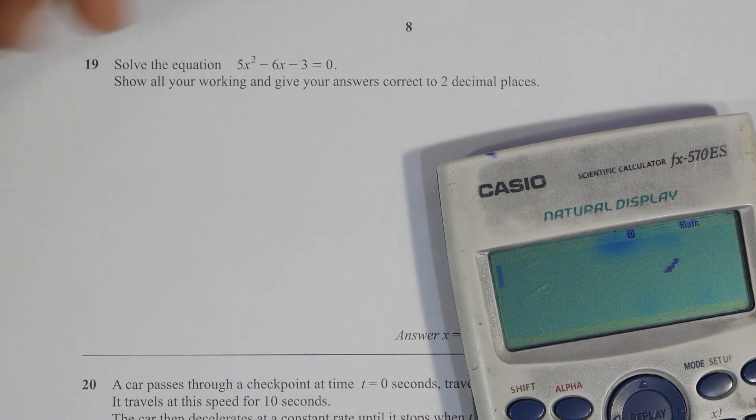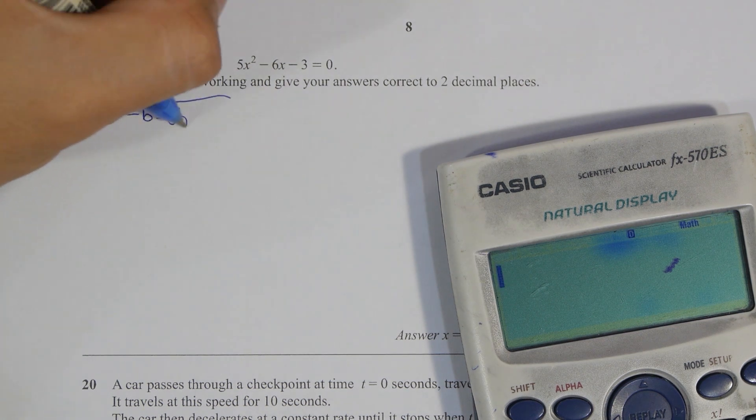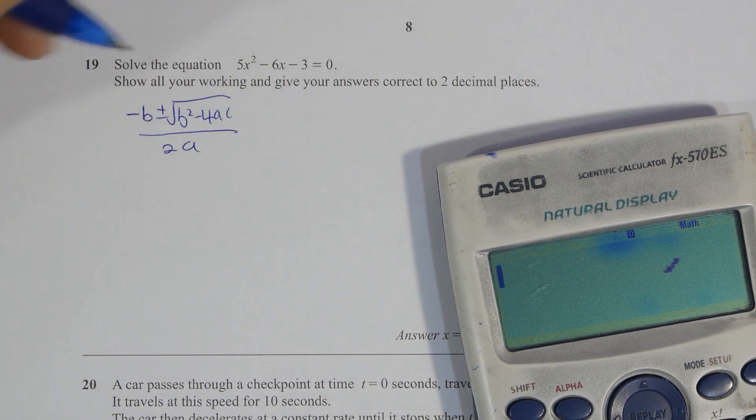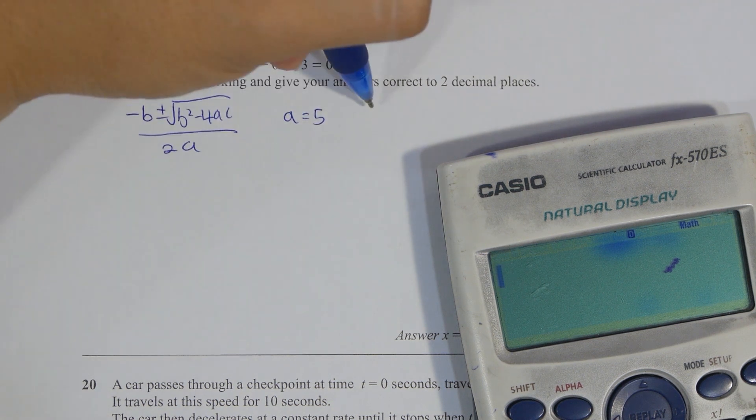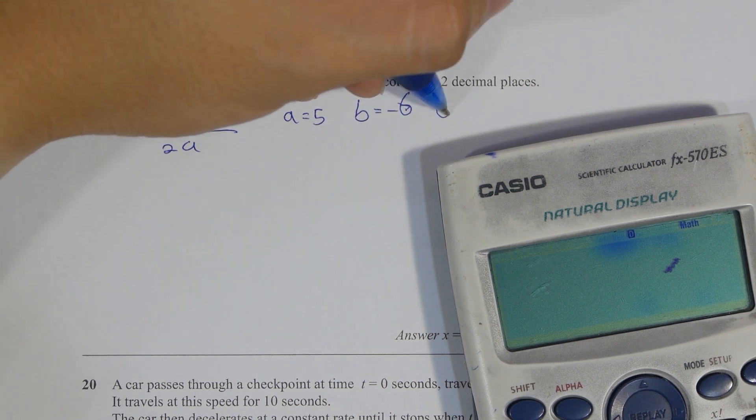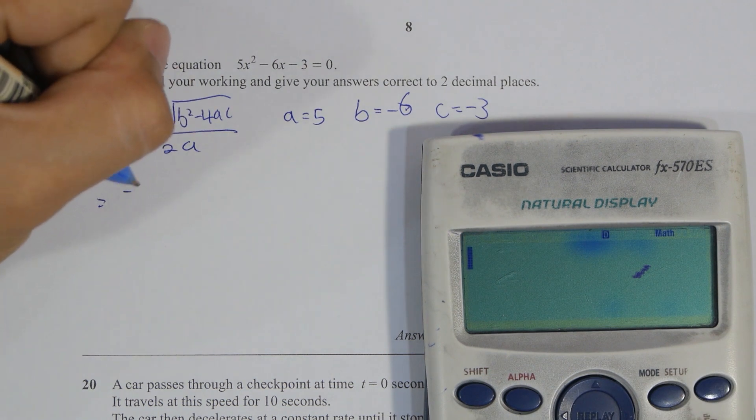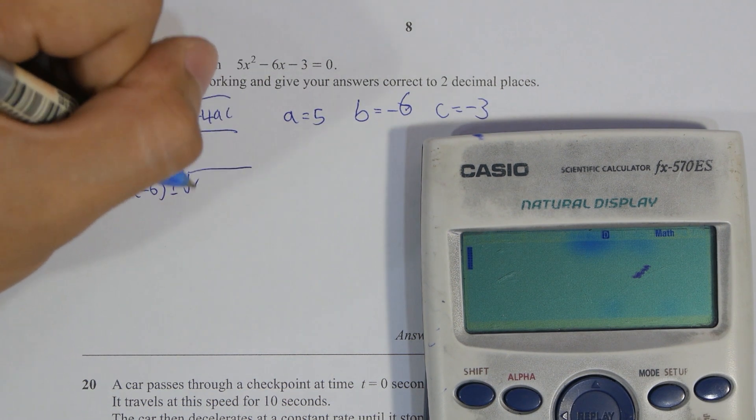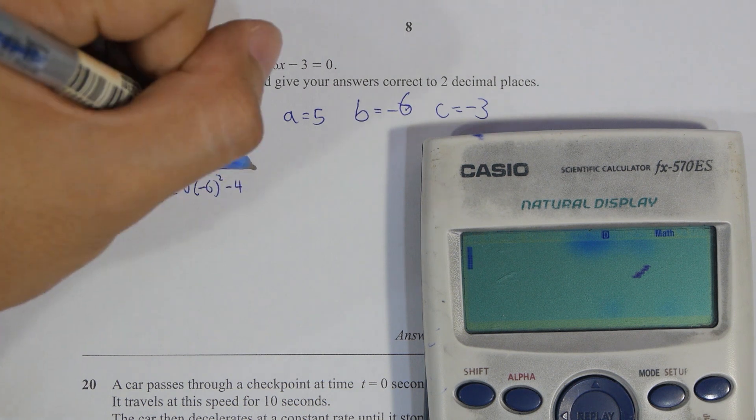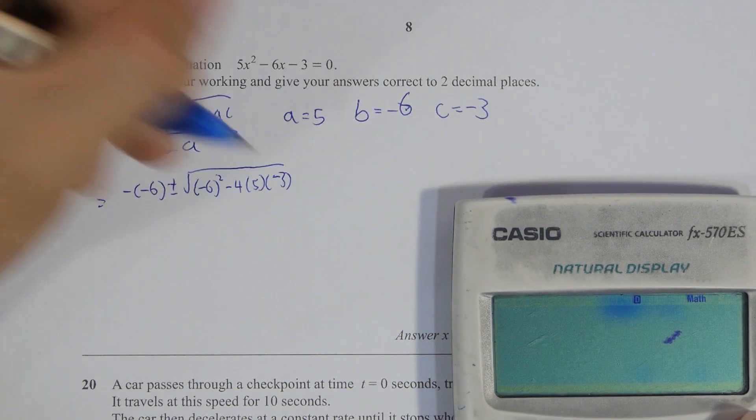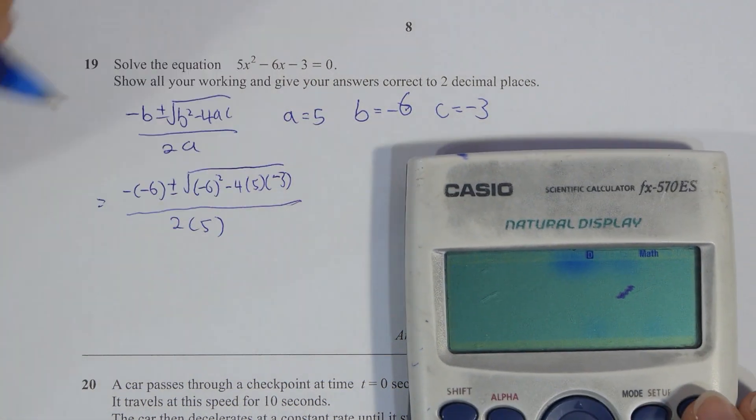Question 19, for this one I identify a as 5, b as negative 6, and c as negative 3. Then substitute all this information into the formula, which goes by negative b plus minus square root b squared minus 4ac over 2a. And the results will be 1.58 and negative 0.38.